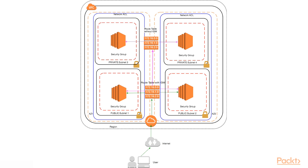Let's try to visualize the concepts we've just learned. Say we have a use case for multiple web servers within a VPC, and we want clients to connect via the internet to our web servers. At the same time, we also want some EC2 instances doing number crunching for the application, but we want those instances to be accessible only via other instances within our VPC — not via the internet.